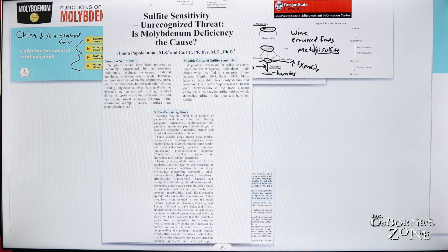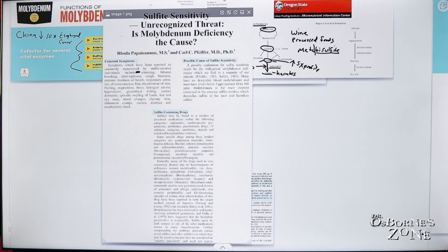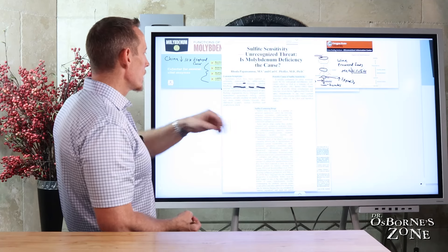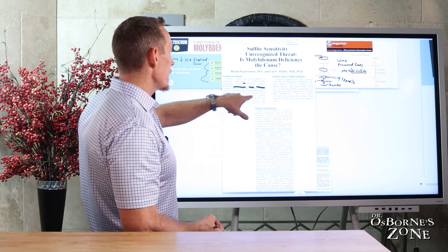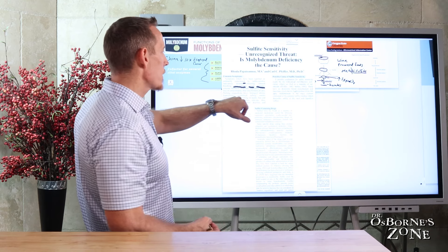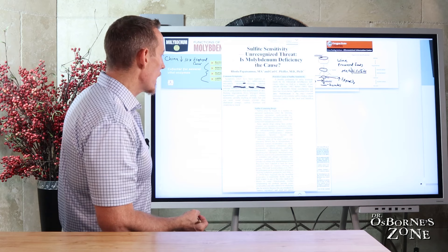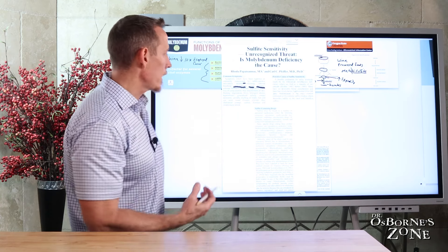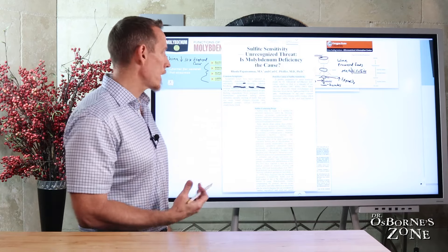Number one, what are the common symptoms of sulfite sensitivity? Wheezing, labored breathing, chest tightness, cough, faintness, extreme shortness of breath, respiratory arrest, loss of consciousness, blue discoloration of the skin, flushing, swelling or angioedema, breaking out in hives, edema and throat, as well as low blood pressure, generalized itching, contact dermatitis, episodic swelling of the hands and the feet, as well as the eye areas, mood changes, clammy skin, abdominal cramps, nausea, diarrhea and as bad as anaphylactic shock, which is a dangerous thing.